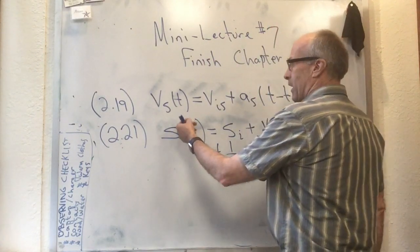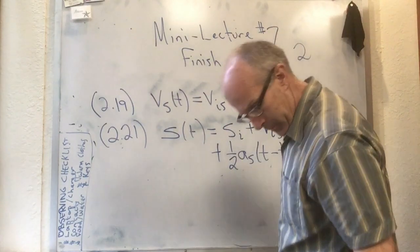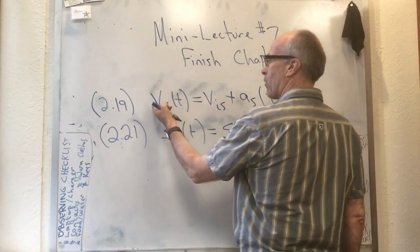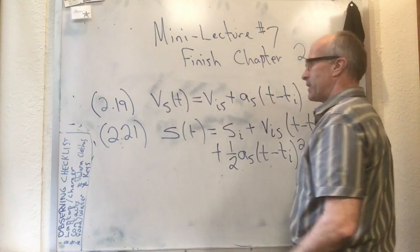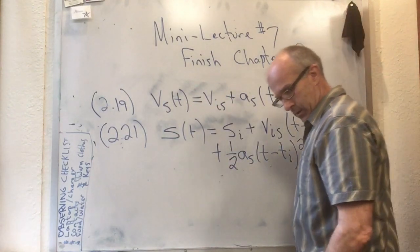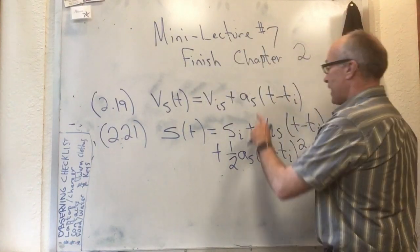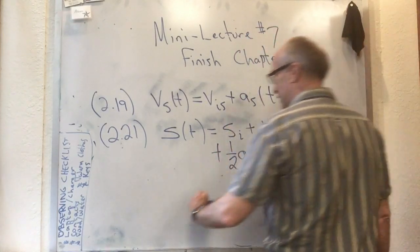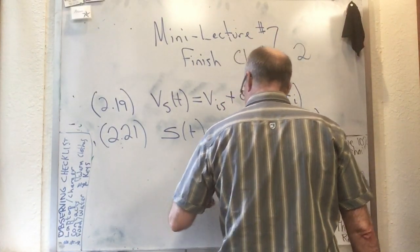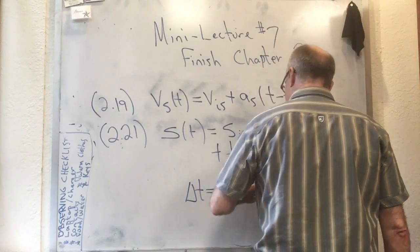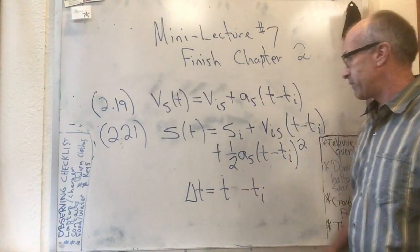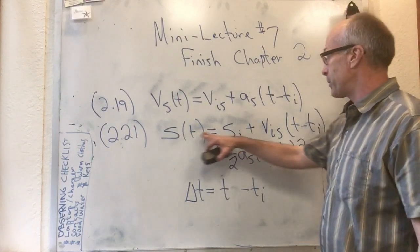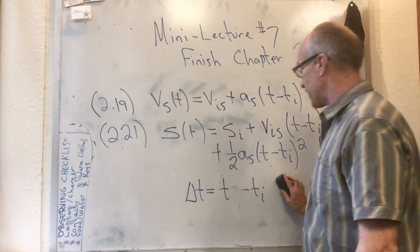Knight on the left-hand side wrote v-final in the s-direction; I just wrote v sub s at time t. On the right-hand side, where I have t minus t_i, Knight wrote delta-t, but for Knight delta-t is t-final minus t-initial — I'm just leaving the f's off my t-final. So mine and Knight's are the same. Similarly, compare my 2.21 with Knight's 2.21.